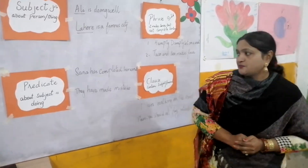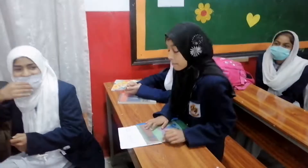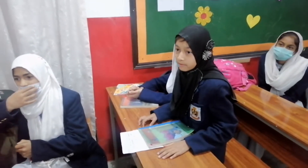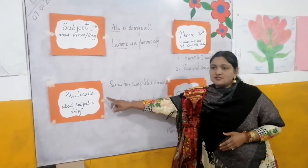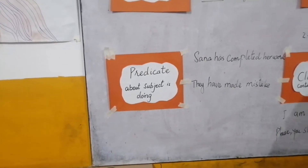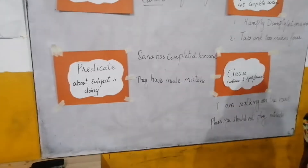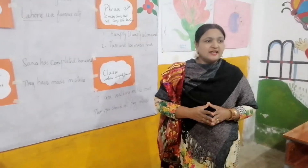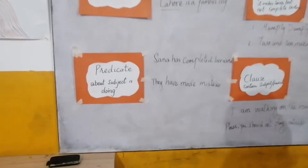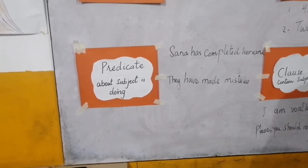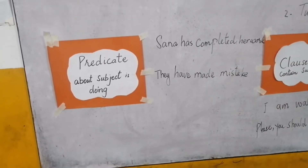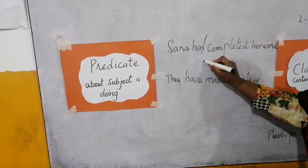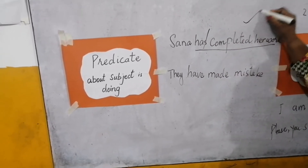Do you understand? Ask questions please. Tell us some example of predicate. First of all I would like to tell you what is predicate. Predicate is about what the subject is doing. In the sentence we talk about some action, some work that is going to be done. That part of the sentence is called the predicate — what the subject is doing. For example, 'Sanat has completed her work' — 'has completed her work' is the predicate.